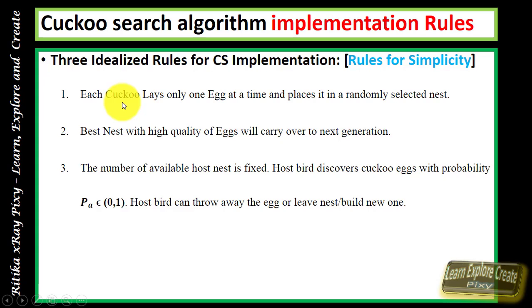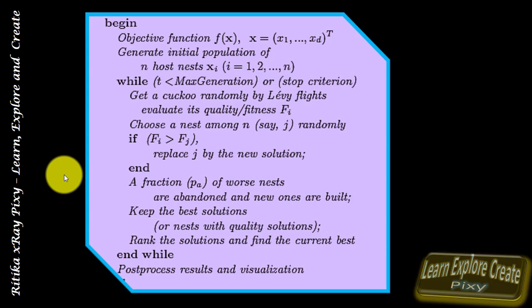For simplicity we will use three rules: first, each cuckoo lays only one egg at a time and places it in a randomly selected nest; second, the best nests with high quality eggs carry over to the next generation; third, the number of host nests is fixed and there is a known probability of discovery of the cuckoo's egg by the host bird. This is the algorithm given in the research paper 'Cuckoo Search via Lévy Flights'.